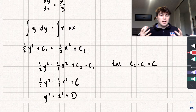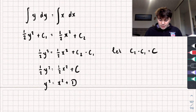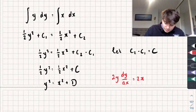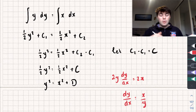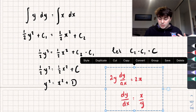So how can we check that this actually worked? We can use implicit differentiation — I'll link that video below. Differentiating y squared equals x squared plus D gives 2y dy/dx equals 2x, and rearranging gives dy/dx equals x over y. Therefore this equation has solved our differential equation — that's separation of variables and how it works.